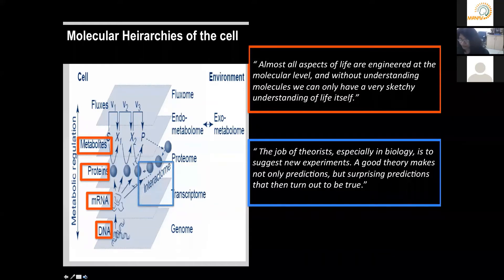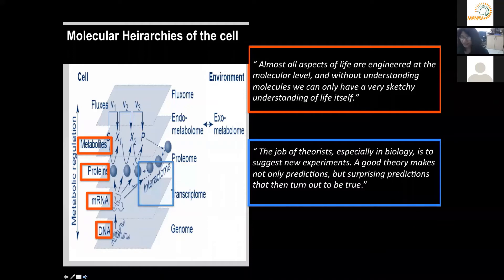Another quote in his book says that the job of theorists, especially in biology, is to suggest new experiments, and a good theory makes not only good predictions but surprising predictions that then turn out to be true. So for any of you planning to become computational or mathematical biologists, it suggests a responsibility to suggest experiments to experimental biologists. He says biological discovery may actually be driven by a novel hypothesis that emerged through a theoretical understanding of the system.